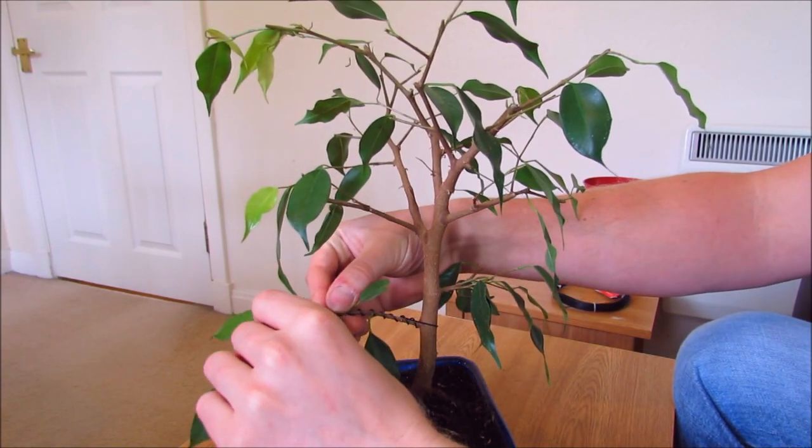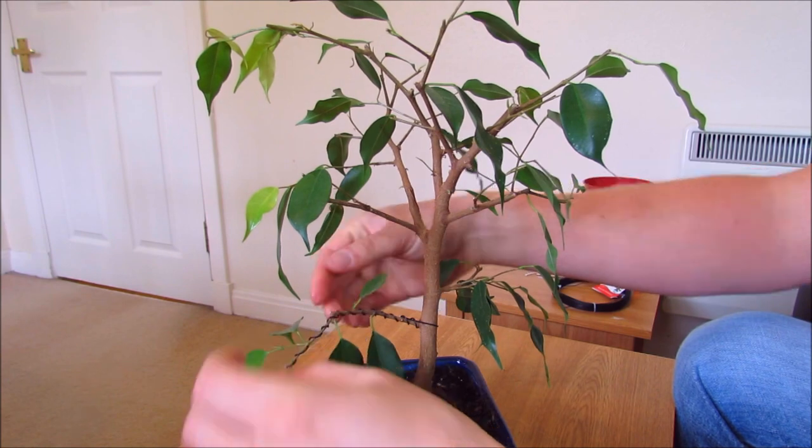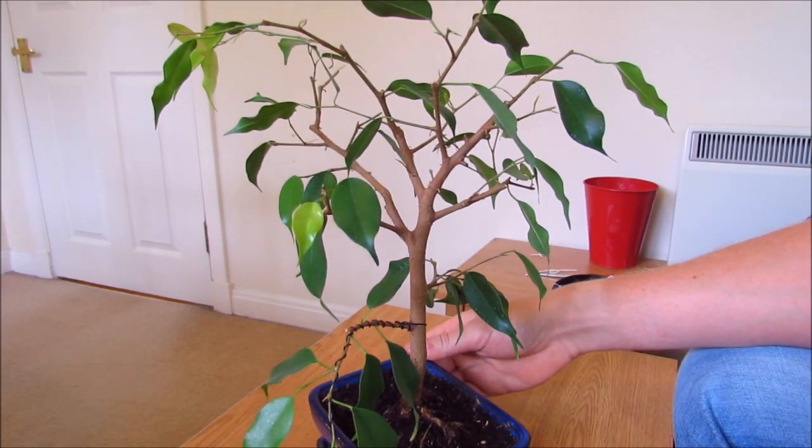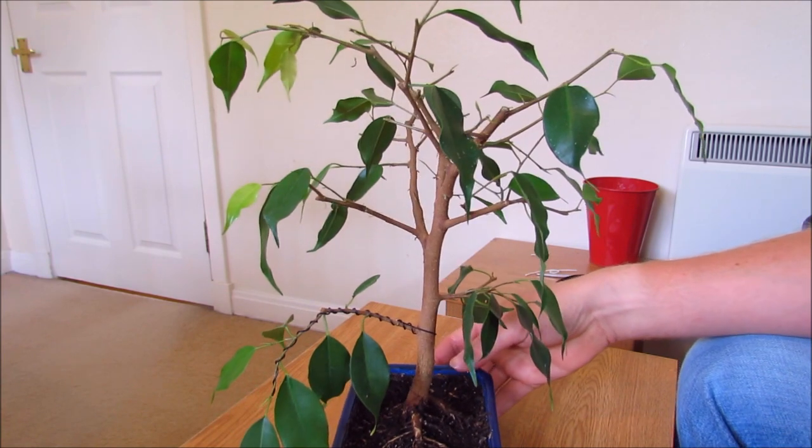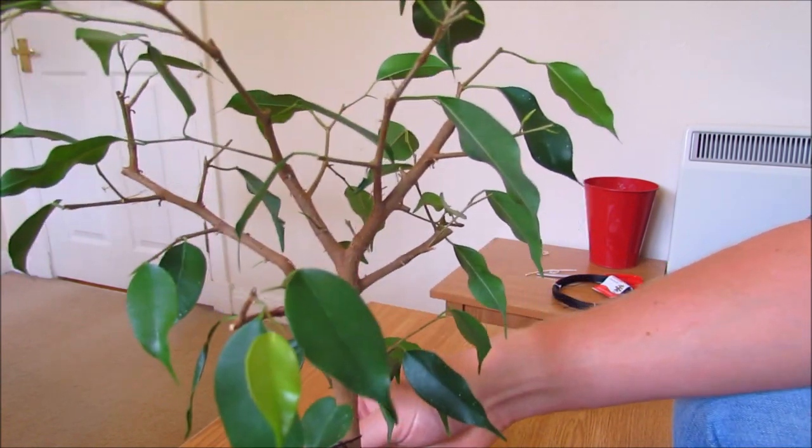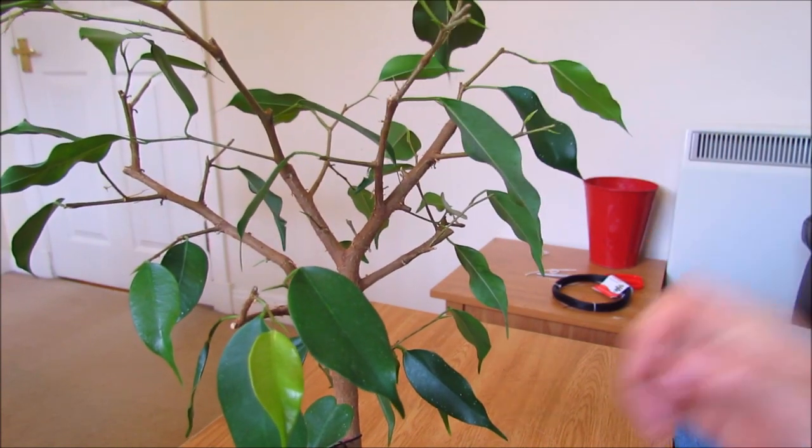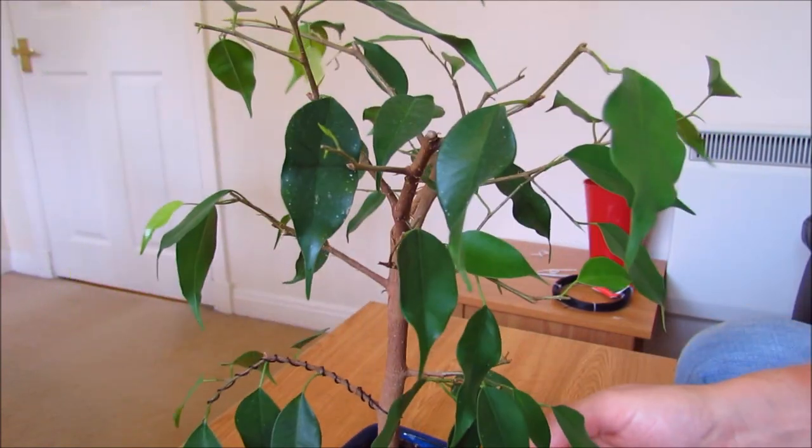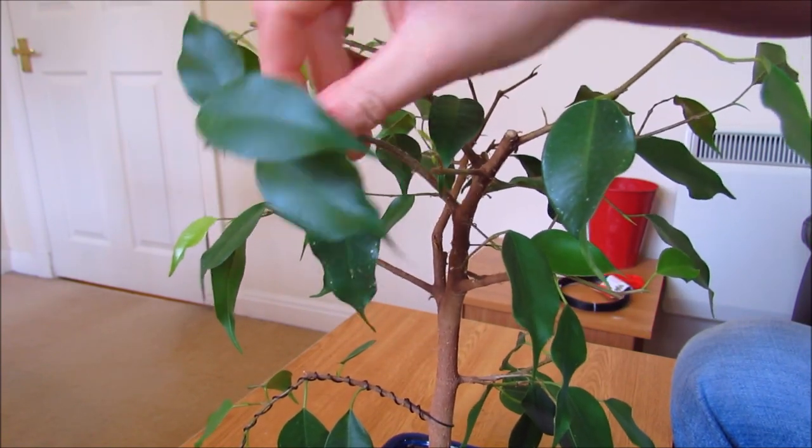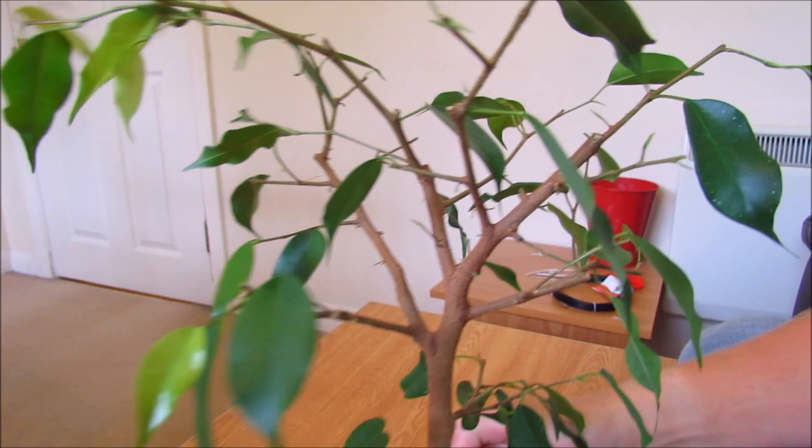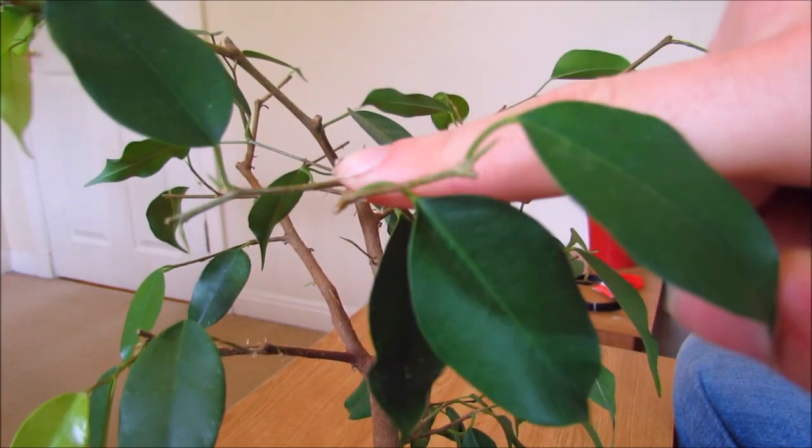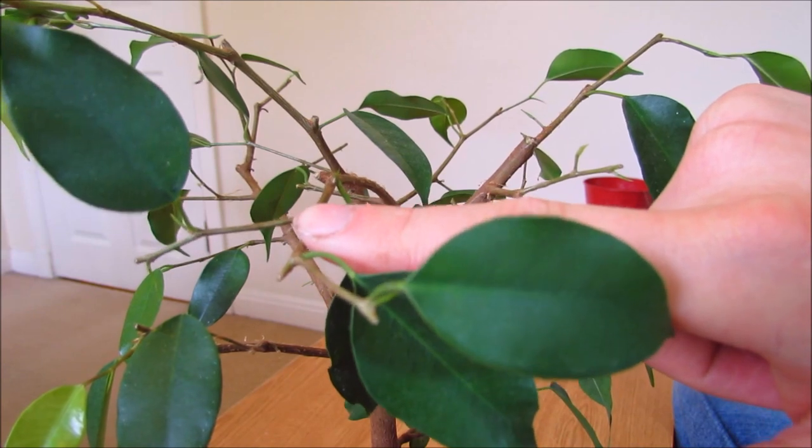So I'm just using this to get a nicer shape. I think this one I'm going to have it weeping slightly, a bit more to the side like so. The next one I'm going to do is this branch over here. You can see this one I'd like more down like that. At the moment it's pointing up a lot but I'd like to have it down because I think it will look nicer in a slightly weeping position.